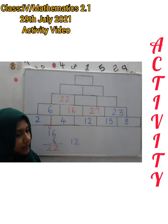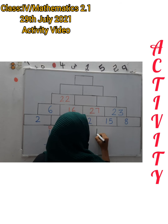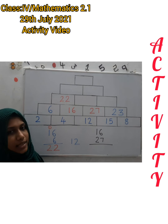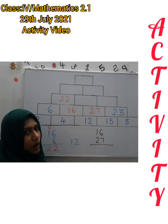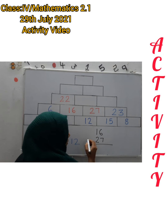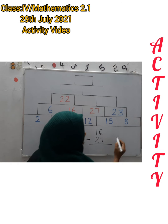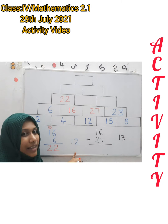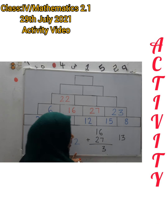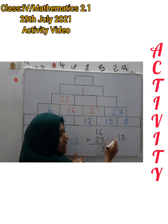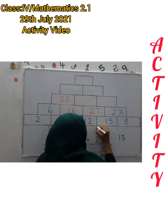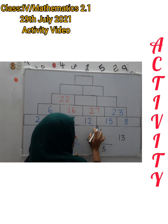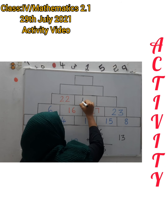Next, add 16 and 27. The 1's places are in one column and the 10's places are in the 2nd column. So 7 plus 6 is 13. We write 3 in the 1's place column, and the remaining 1 goes to the 10's place column. Then 2 plus 1 is 3, and 3 plus 1 is 4. The answer is 43.